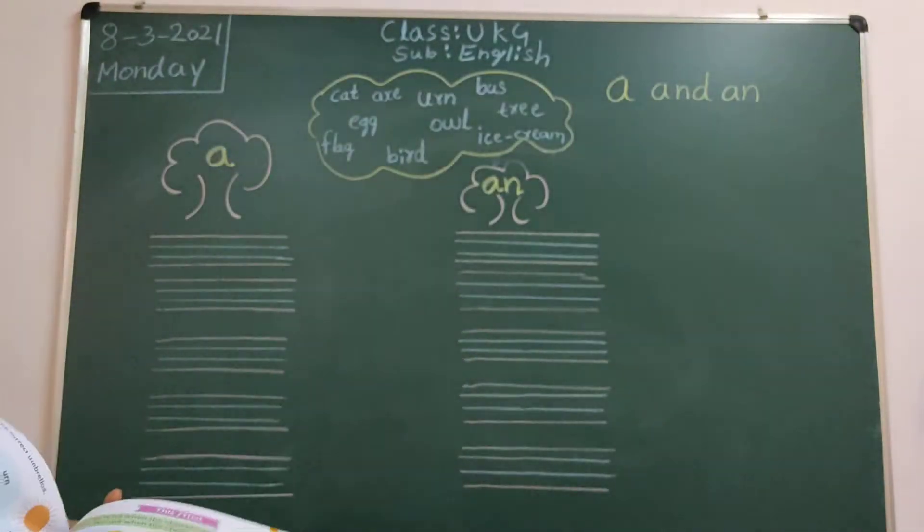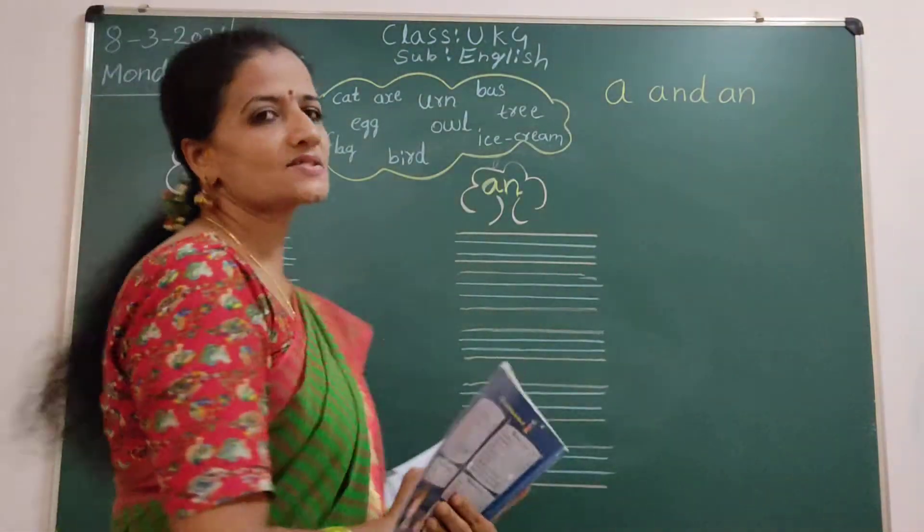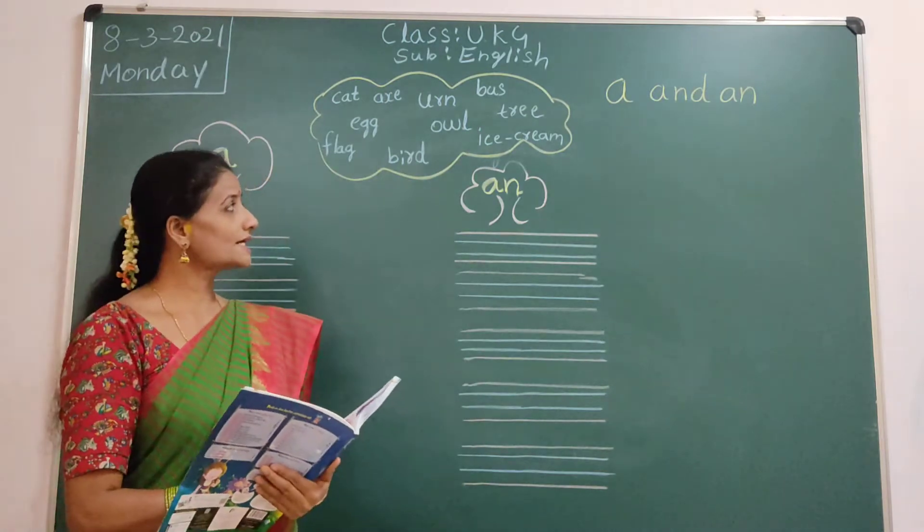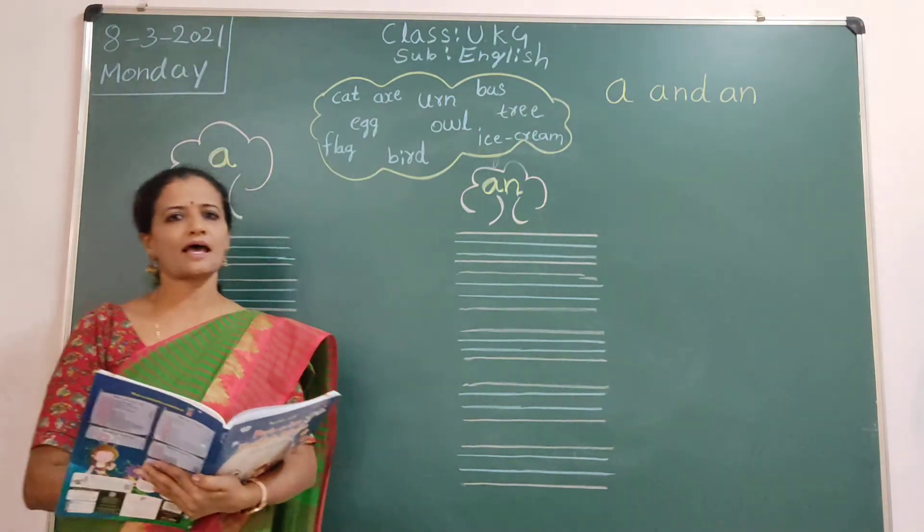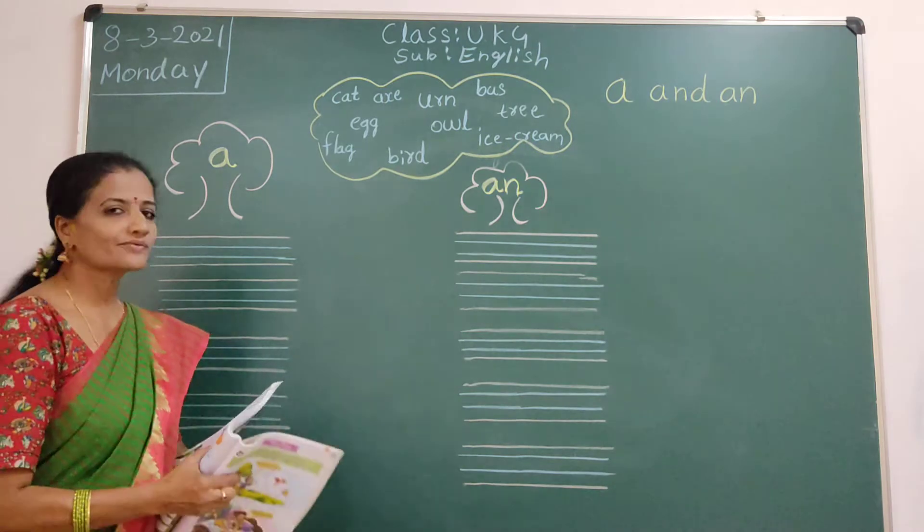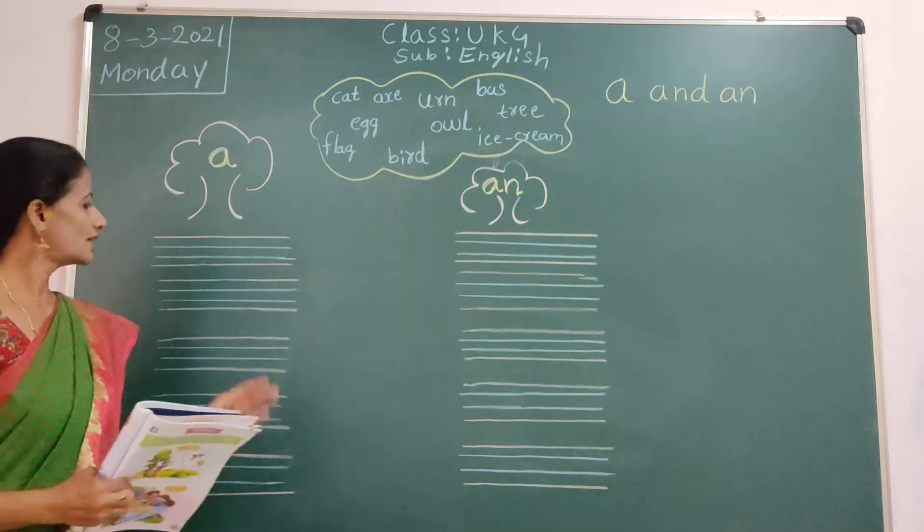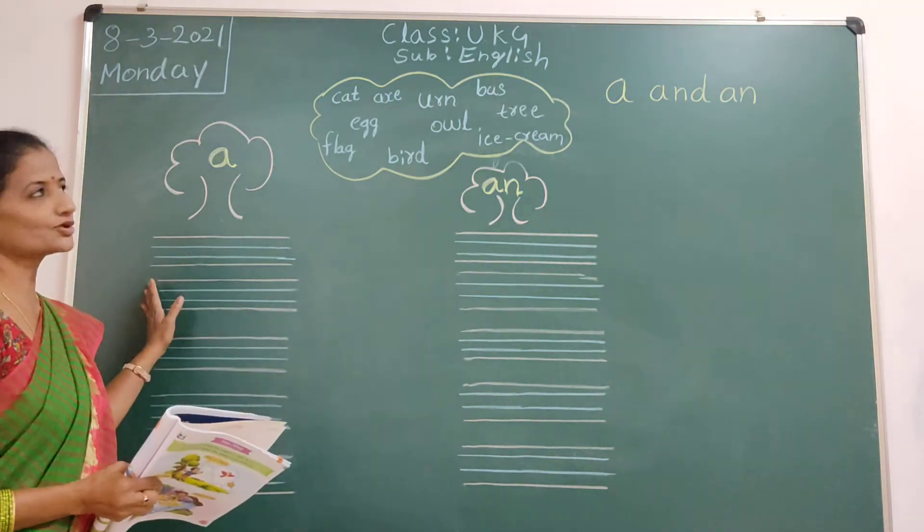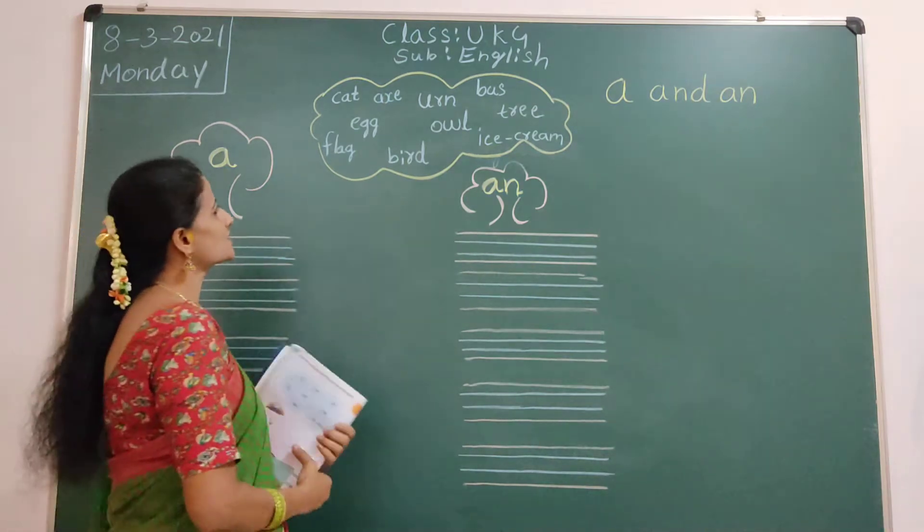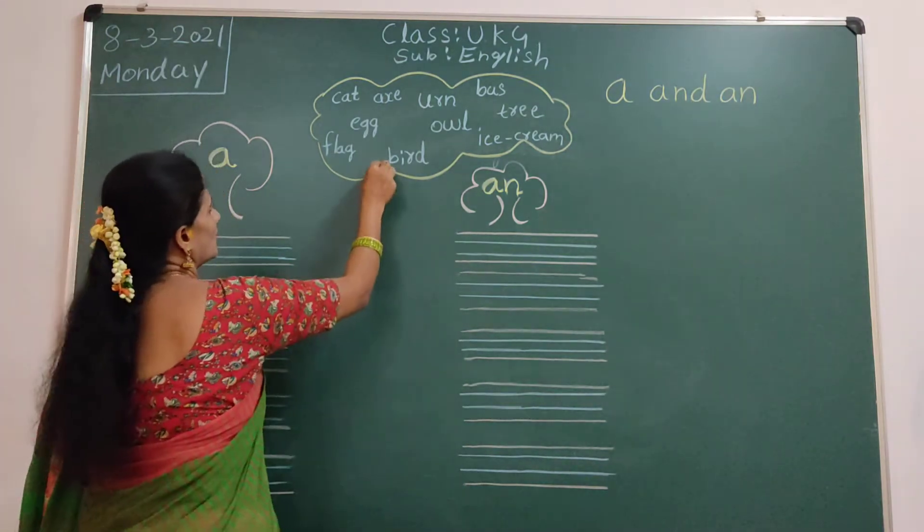Ok children. So take out your English classwork. We will write some A and An words. Ok children. Take out your English classwork. Four line words. You draw fast here.